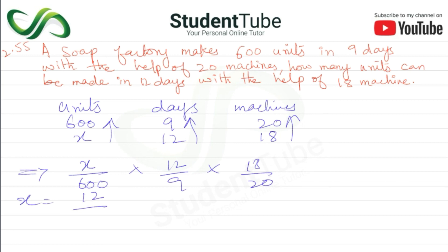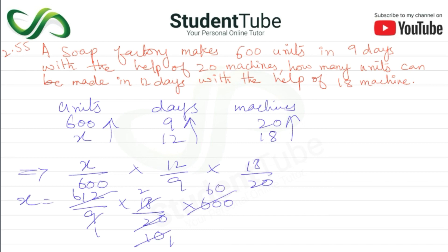So the equation is: X upon 600 equals 12 upon 9 multiplied by 18 upon 20. Therefore X is equal to 12 upon 9 multiplied by 18 upon 20 multiplied by 600. Simplifying: 9 twos are 18, 2 sixes are 12, 10 sixes are 60, then multiplying gives answer 720.